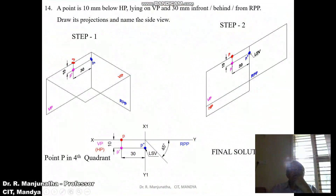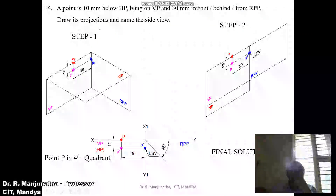The problem states: 10mm below HP, lying on VP, and 30mm in front of or behind RPP — draw its projections and name the side view. Since the point is lying on VP, we focus on the condition of being below HP.